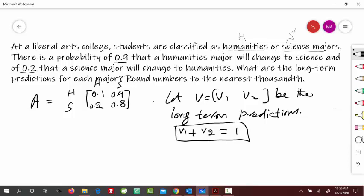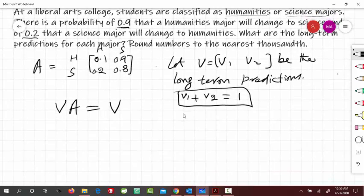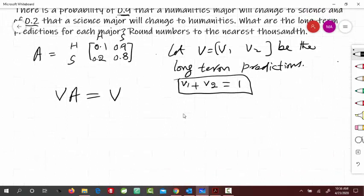And because long-term trend, which is also called equilibrium vector, it means that we have to solve this equilibrium equation that VA = V. So V is V1, V2, and our A is 0.1, 0.9, 0.2, 0.8. So that should be equal to V1, V2.